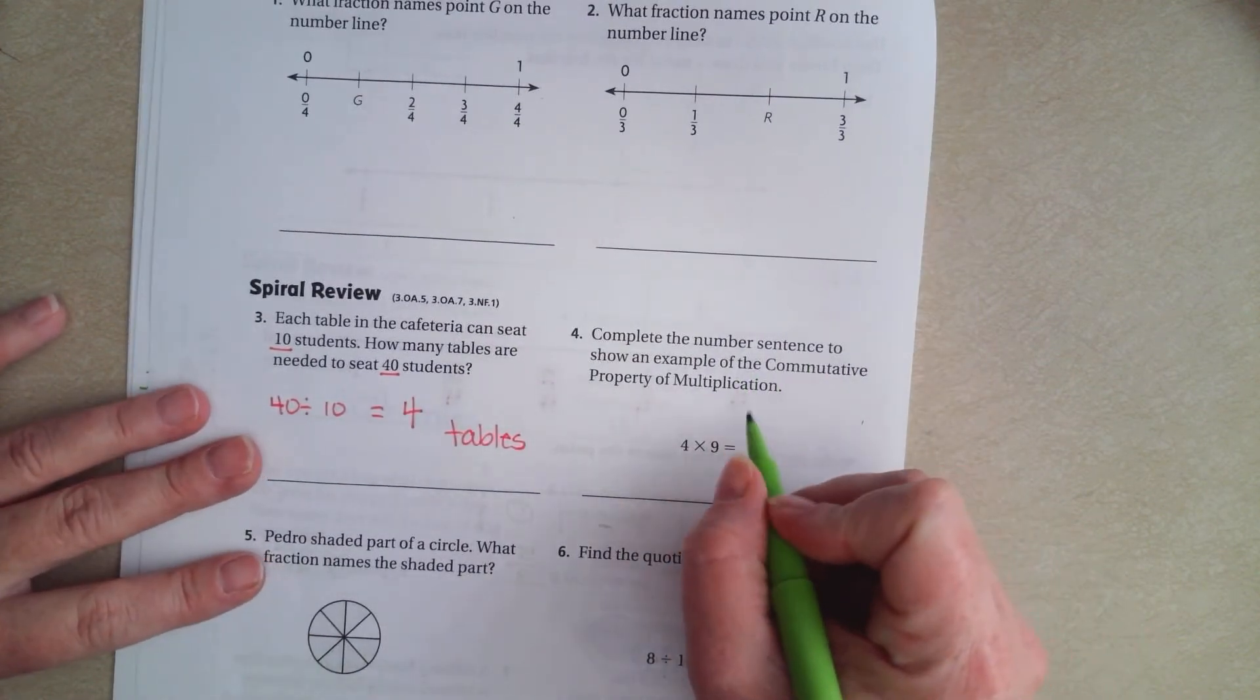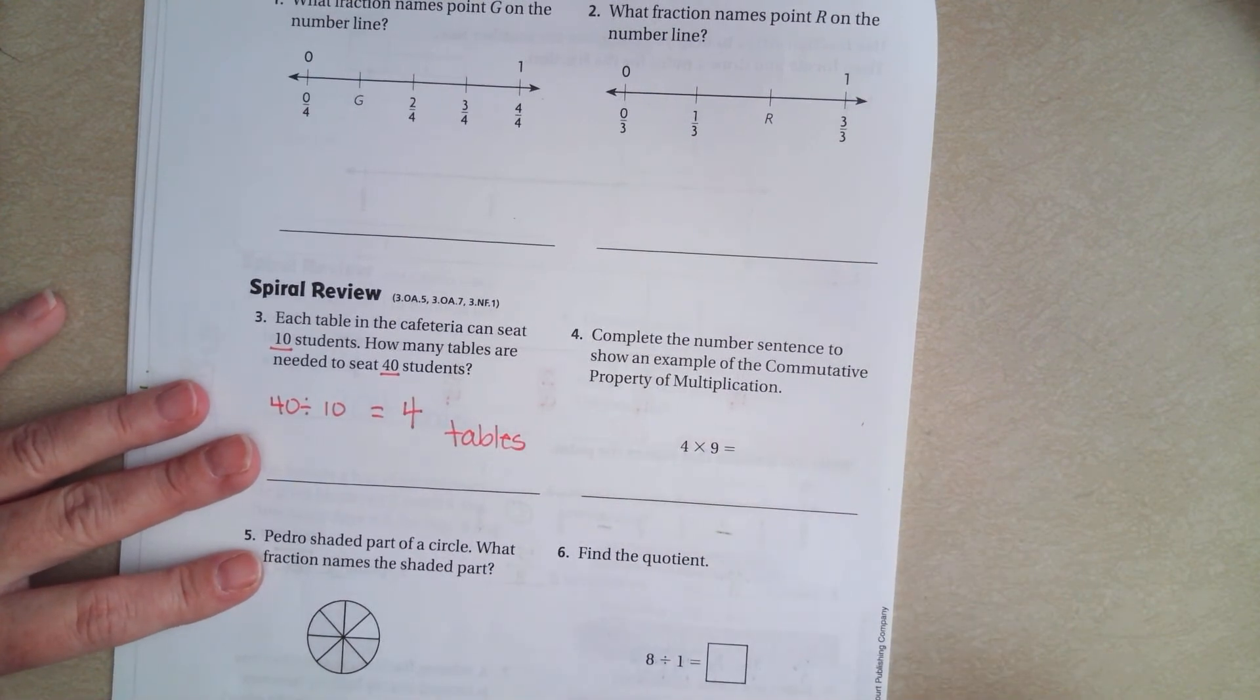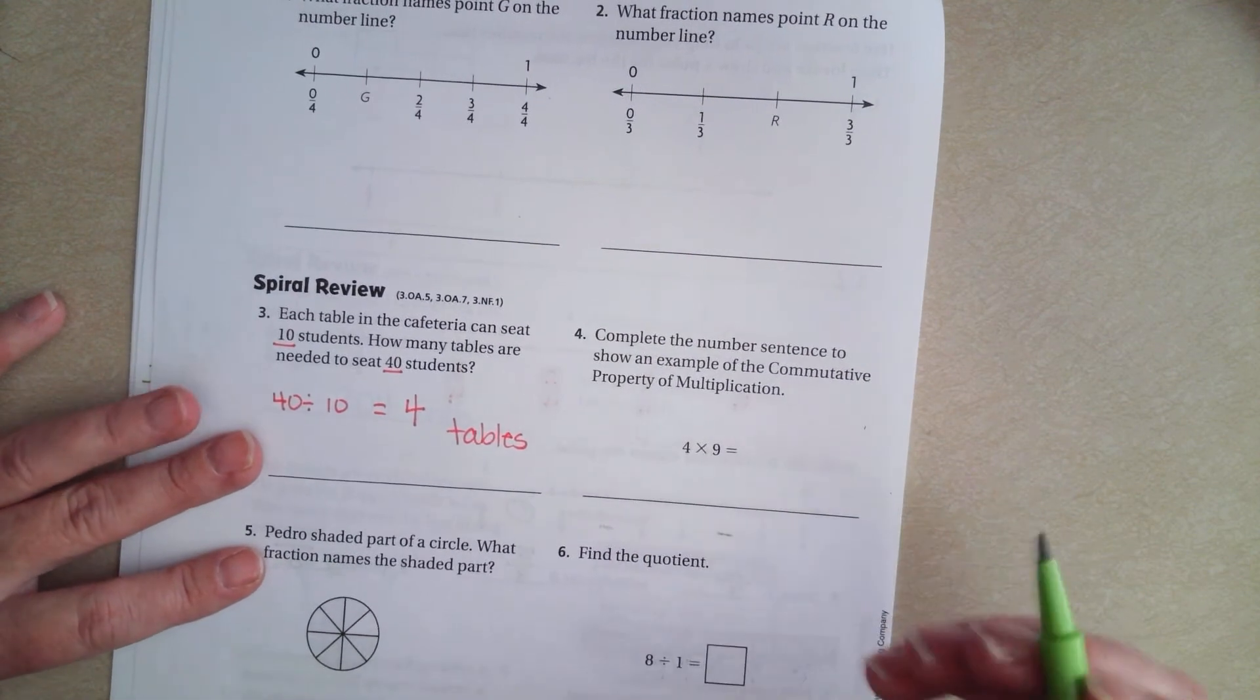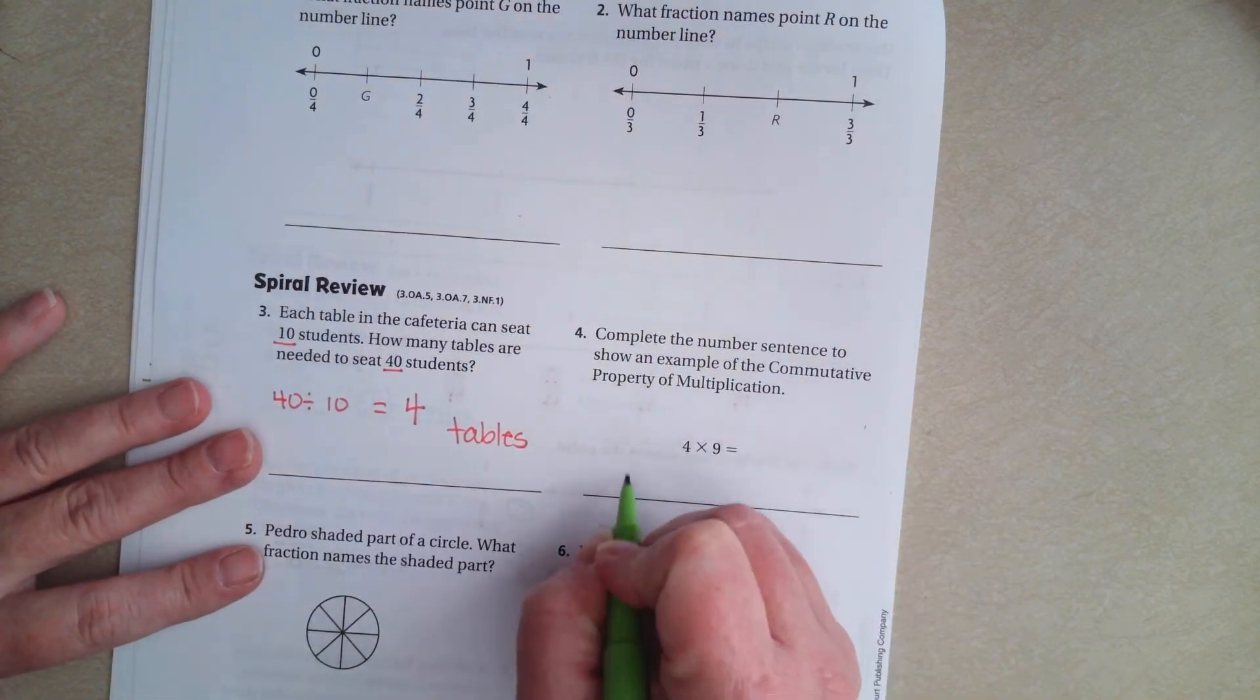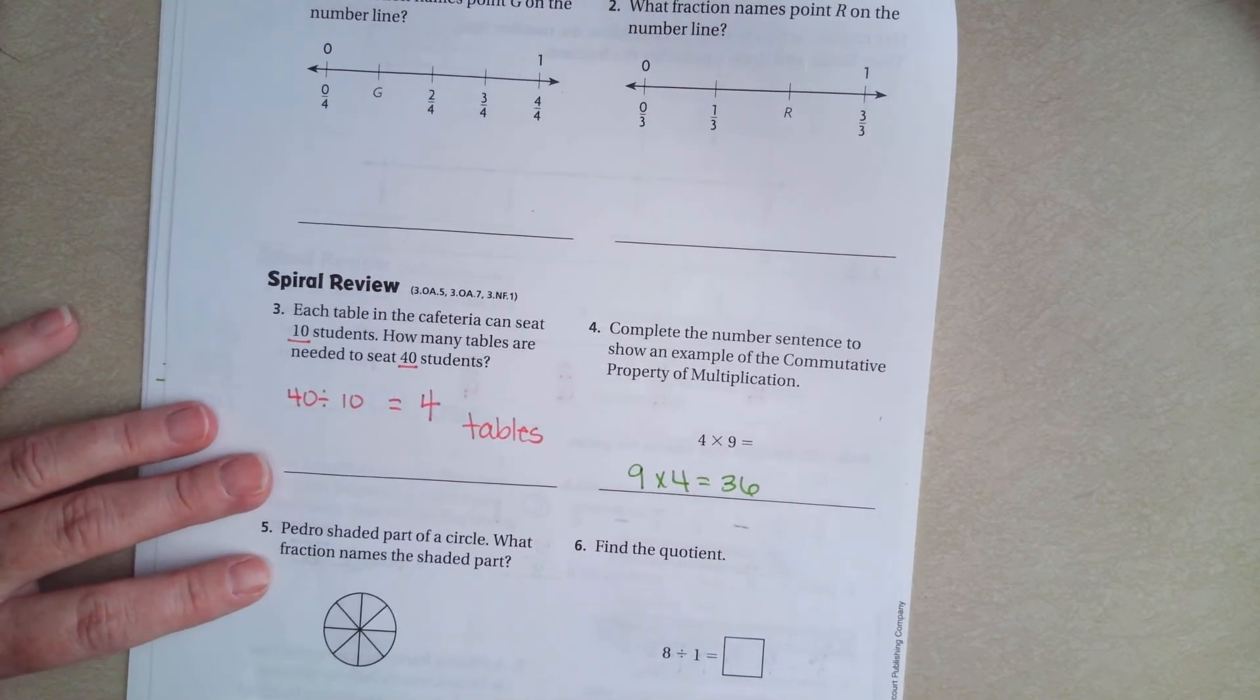Complete the number sentence to show an example of the commutative property. When you do the commutative property, it's just changing the order of the numbers around. So, you still have the same numbers. So, instead of 4 times 9, I'm going to put 9 times 4. Equals 36.